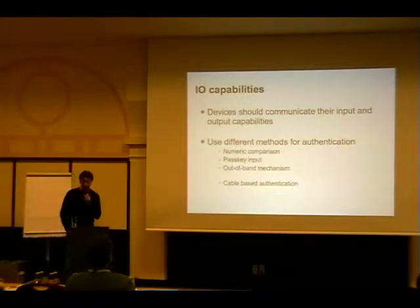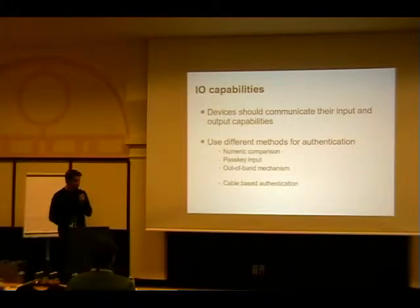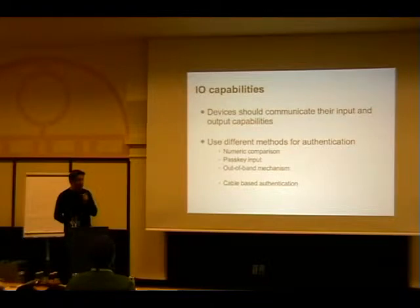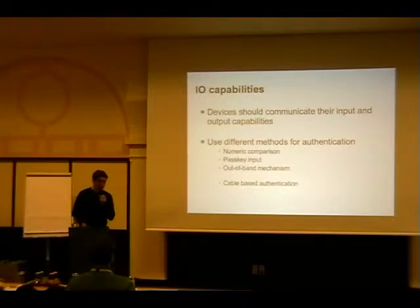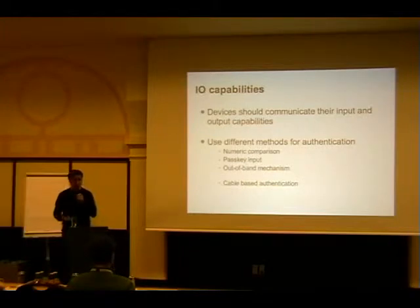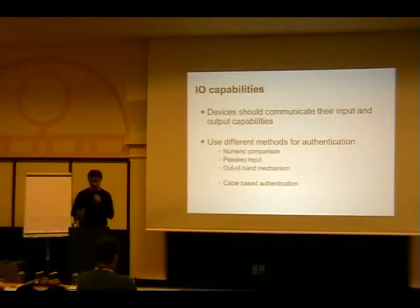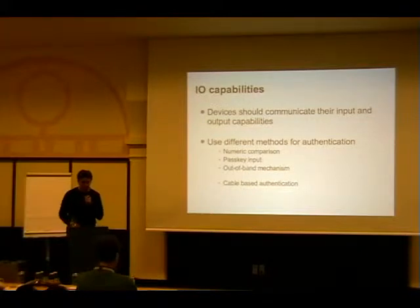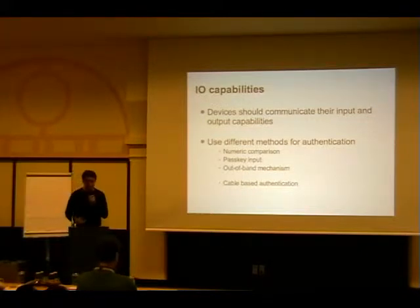IO capabilities: the basic idea is a device tells the other device what it can do — if it has an input device like a keyboard or keypad, or if it has output capability so it can display something. For example, a keyboard has input capability, a mouse has no input or output capability, a computer has both input and output, and a display like a picture frame has only display capability.